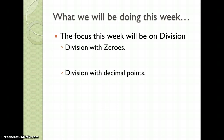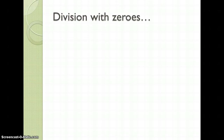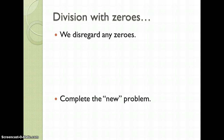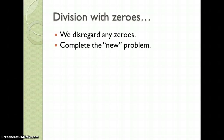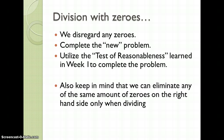We're going to divide with zeros, with decimal points, divide by 4, divide by 5, and divide by 25. To divide with zeros, we're going to disregard any zeros that we might have, complete the new problem, and use the test of reasonableness learned in week 1 to complete the problem. Also keep in mind we can eliminate any of the same amount of zeros on the right-hand side and the left-hand side only when we are dividing.